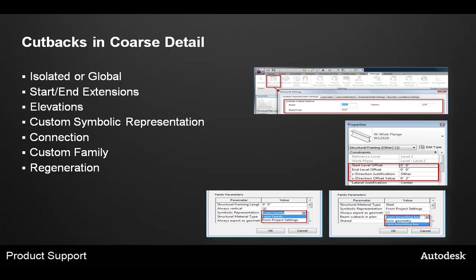Is your beam a custom family? If so, try replacing the beam with an out-of-the-box family to see if the issue is due to how the custom family was created. Another great tip is to try cutting and pasting the structural members to see if the representation appears correctly. If necessary, try recreating the members associated with the connection. Performing these actions helps to regenerate the Revit database and can resolve beam display cutbacks.